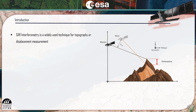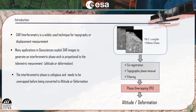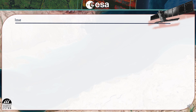SAR interferometry is a widely used technique for topography or displacement measurement. In fact, for many applications in geosciences, SAR images are used to generate an interferometric phase which is proportional to the telemetric measurement. However, the interferometric phase is ambiguous and needs to be unwrapped before being converted to altitude or deformation. Since the interferometric phase is known modulo 2pi, it needs a phase unwrapping algorithm to reconstruct the absolute phase.